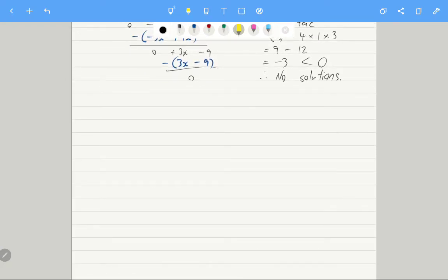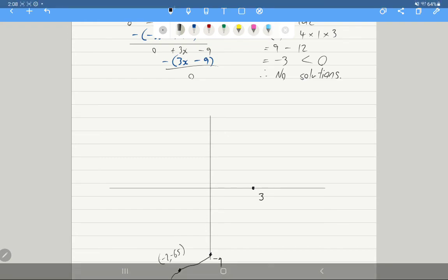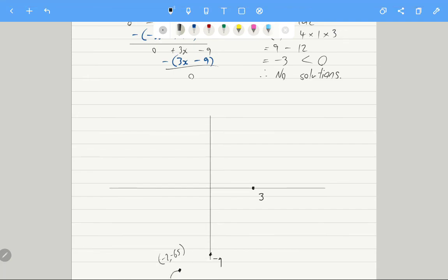So when it comes to our sketch, we know our y-intercept, we know our point of inflection, and we know the one and only x-intercept. And so we can now go through and sketch our graph. There's our x-intercept, our y-intercept, and our point of inflection. Now it's an increasing point of inflection, so it's going to look something like that.